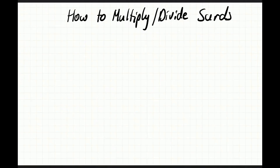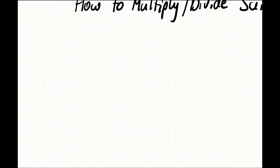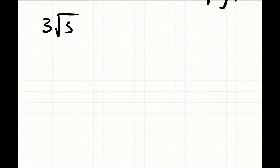In this video we are going to look at how to multiply and divide surds. Let's start off with an example, then we'll have some more context. Let's say we have 3√5 and we're multiplying that by 4√3.